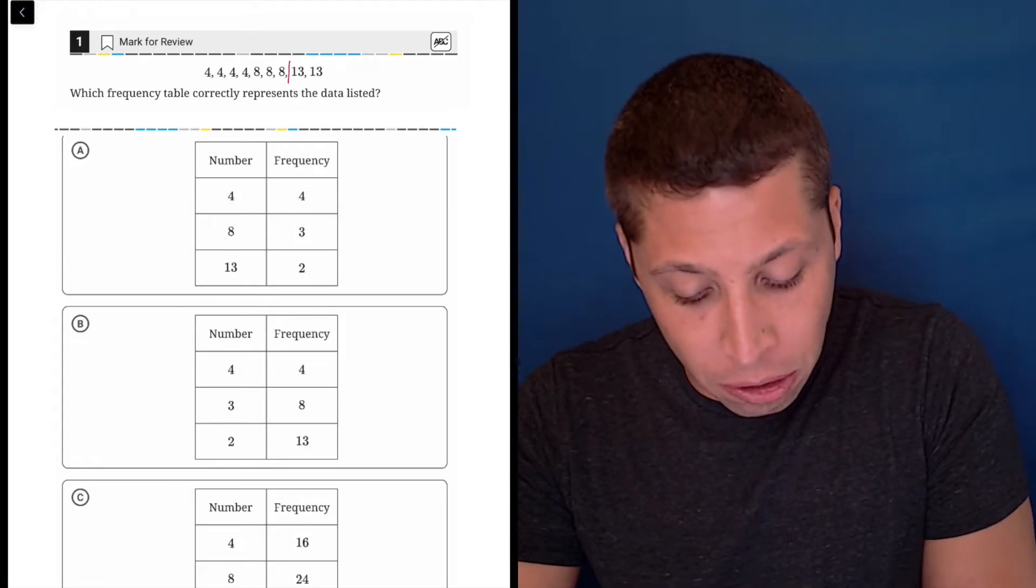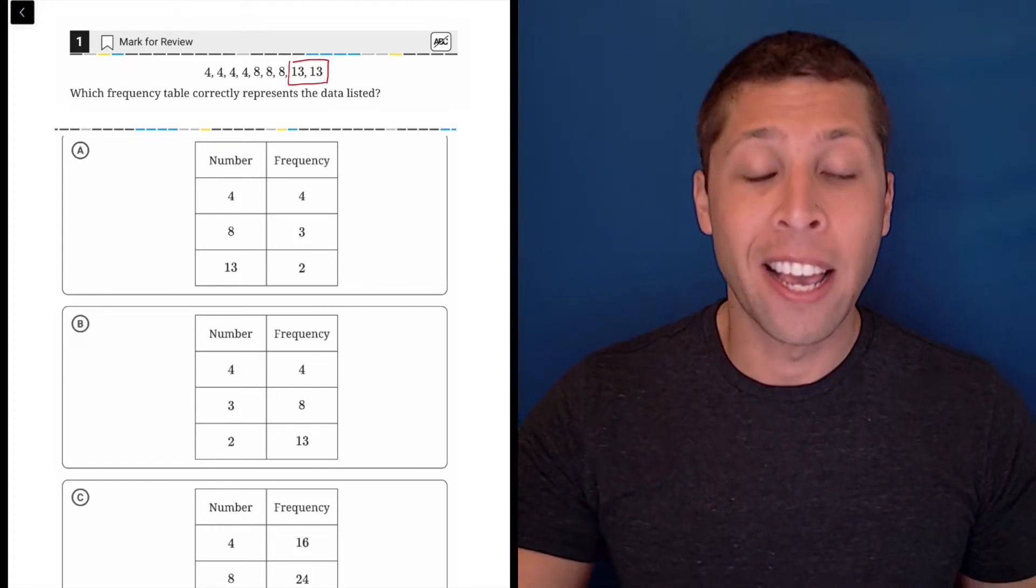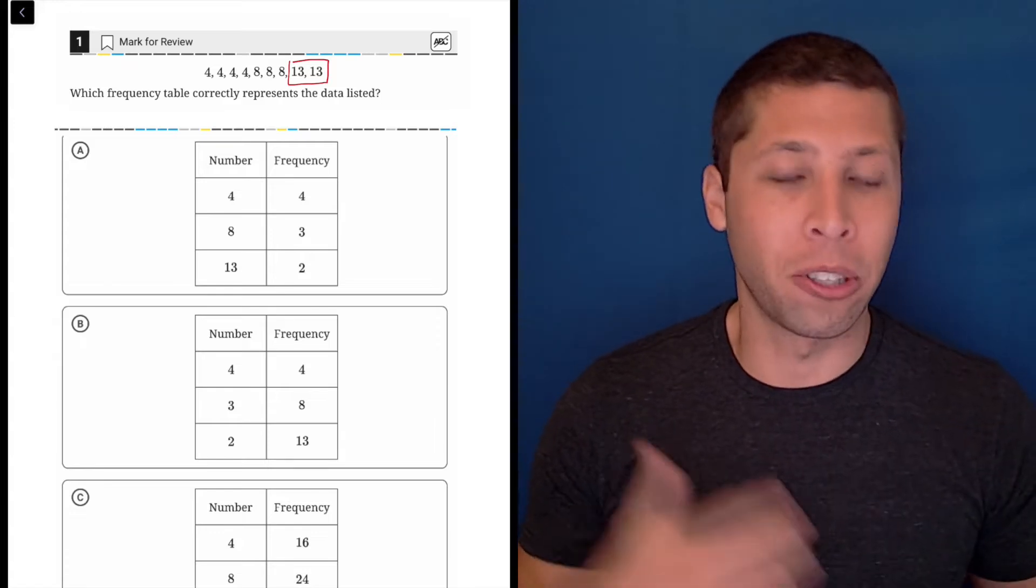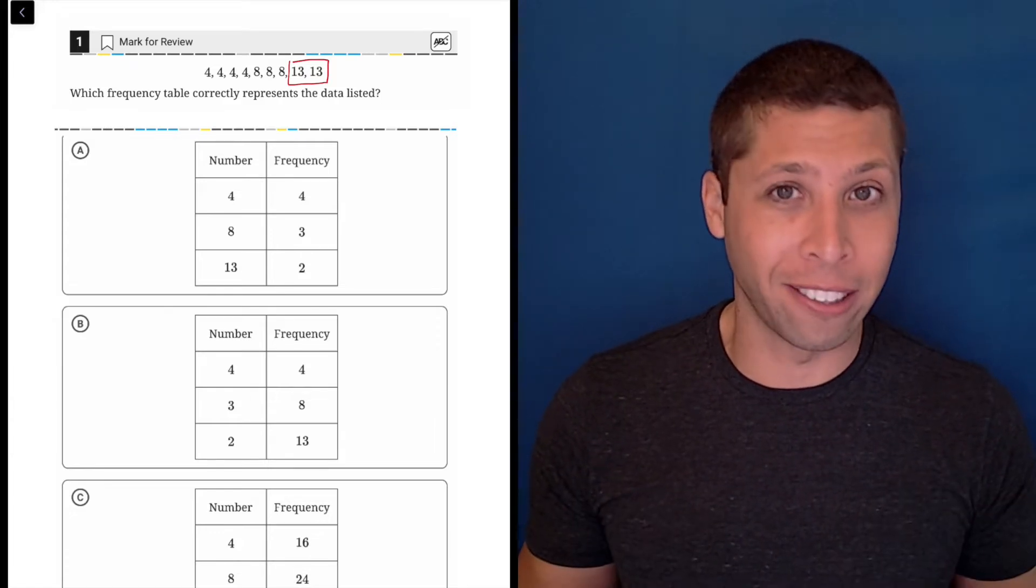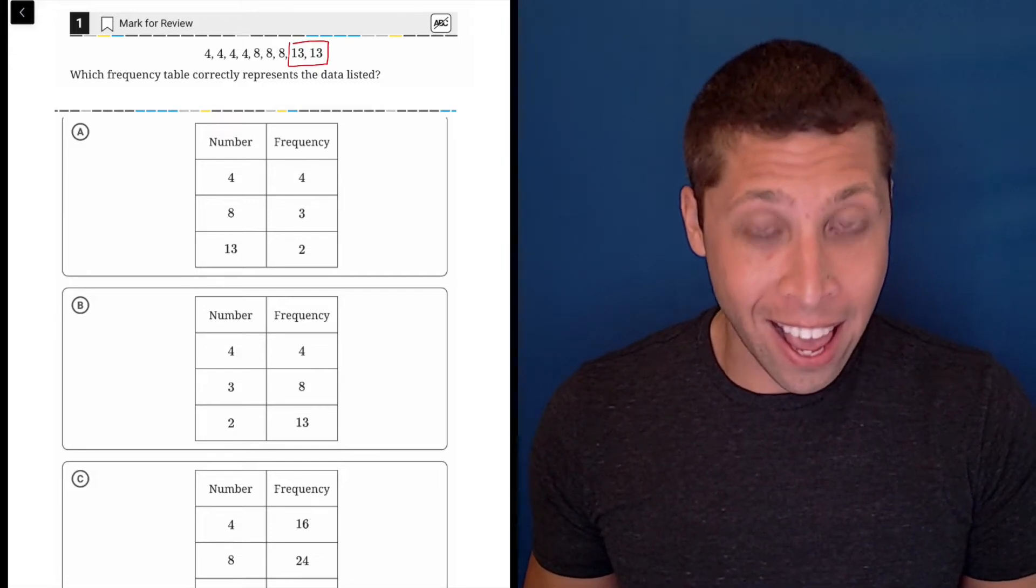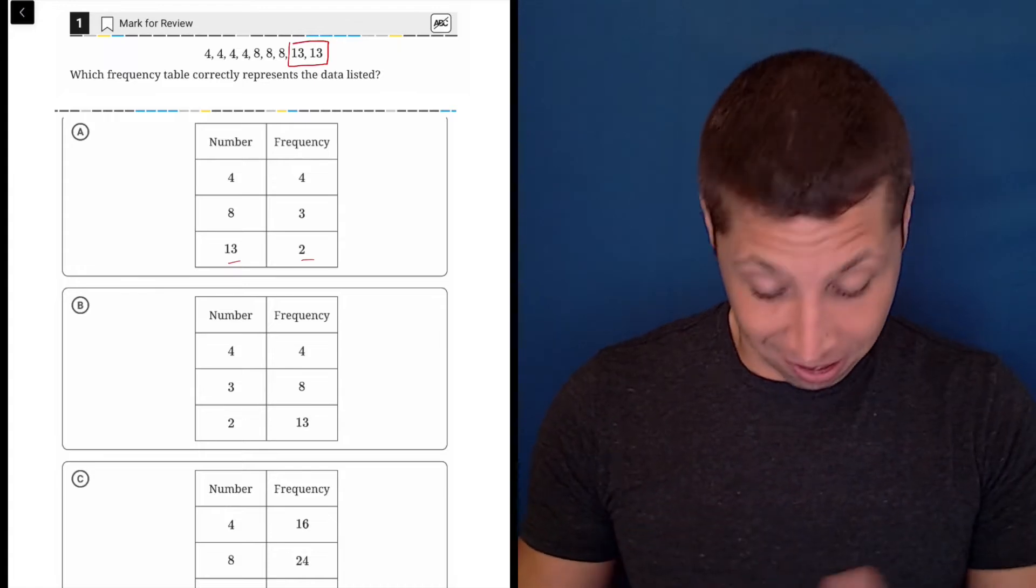And so the first thing that catches my eye is that on the end here are two 13s, meaning the number 13 has a frequency of two. So now I would just scan through my answers and see if that matches up. So we can see in choice A that the numbers 13 and two appear and that's correct.